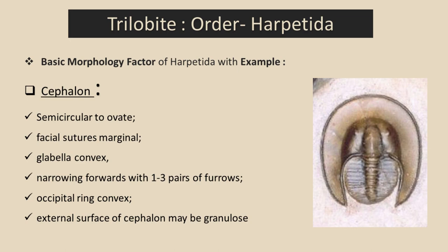We can see furrows in the glabella. The occipital ring is located between the glabella and the thorax — we can also say it is located below the glabella. The occipital ring is found in a convex shape in Order Harpetida. The external surface of the cephalon may be granulose, meaning it has a rough surface.